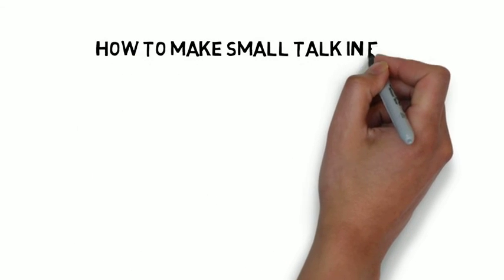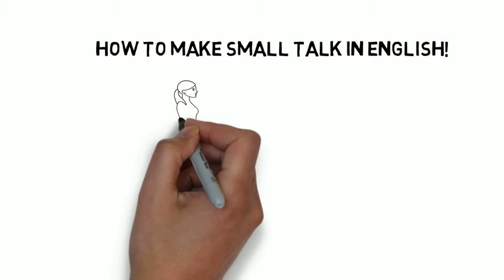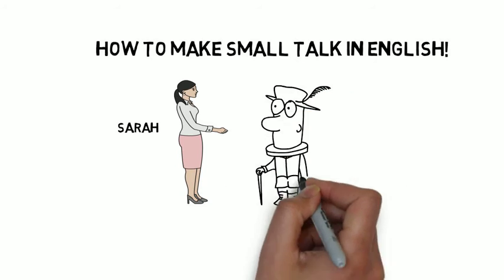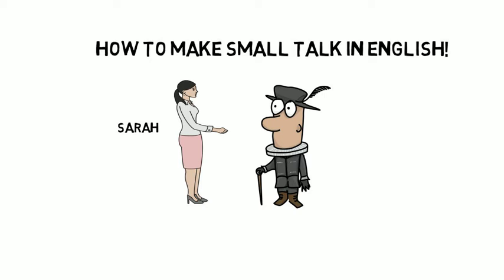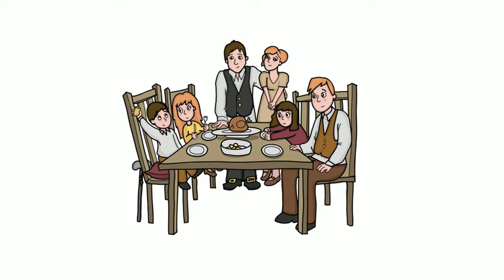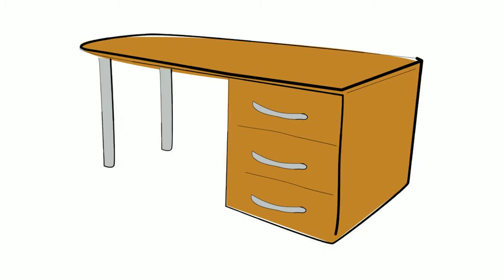How to make small talk in English. Say there's a girl, Sarah, and there's a guy — me, Charles — and we don't know each other at all, but we've got to make polite conversation. We call that small talk. You might do that at a lunch, for example, with some family members you don't know, or Sarah could be a work colleague and we work in the same office and we have to make small talk.